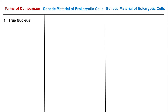When we talk about the genetic material of any cell, we know it is usually located in the center of the cell in an organelle named the nucleus. However, a true distinct nucleus is absent in prokaryotic cells and is always present in eukaryotic cells.